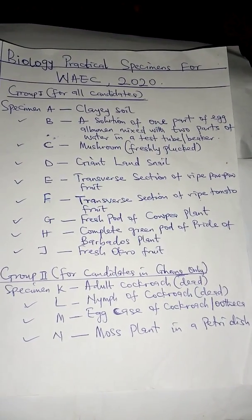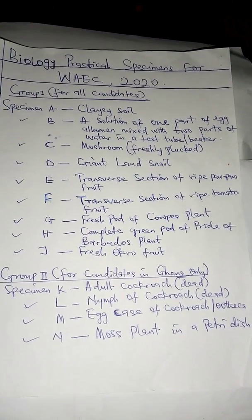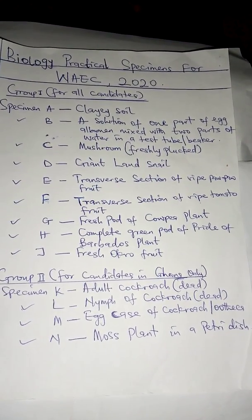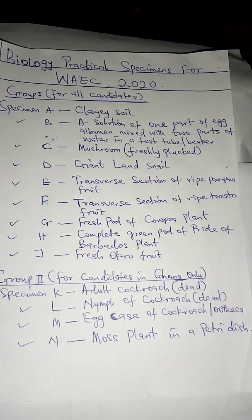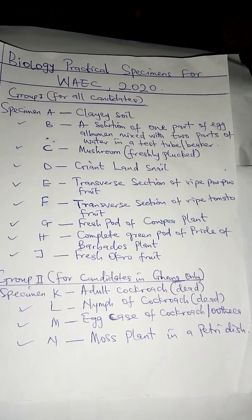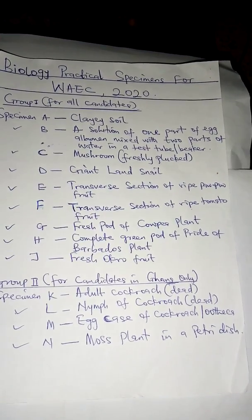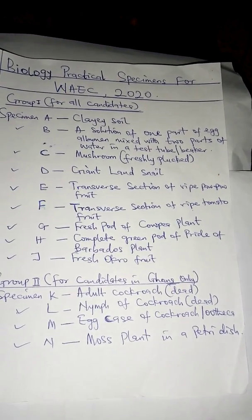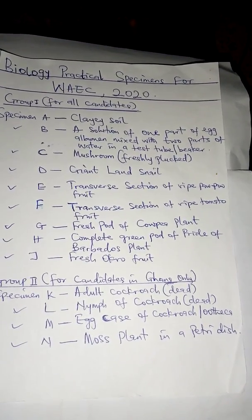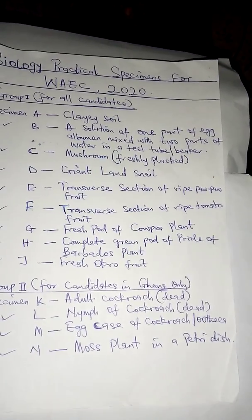Group II for candidates in Ghana only. Specimen K: adult cockroach, dead. Specimen L: nymph of cockroach, dead. Specimen M: egg case of cockroach or ootheca. Specimen N: moist plants in a petri dish.